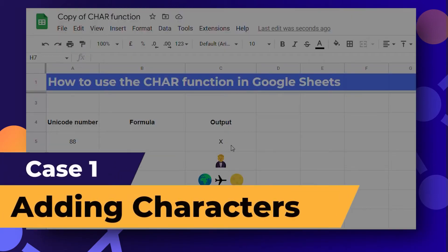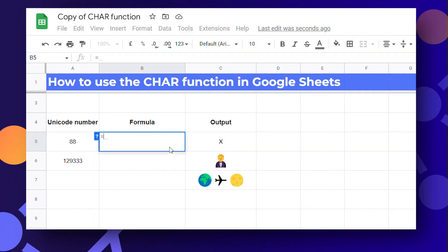Firstly you can add any character by this function in a cell. Just write equals to char and then the unicode for that character and there you go.